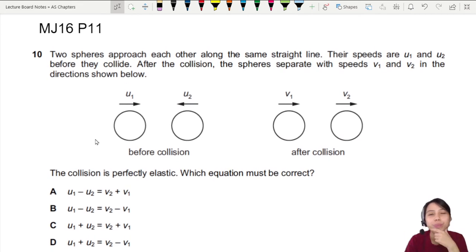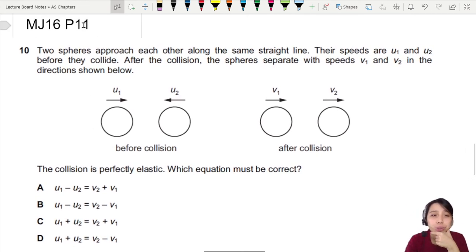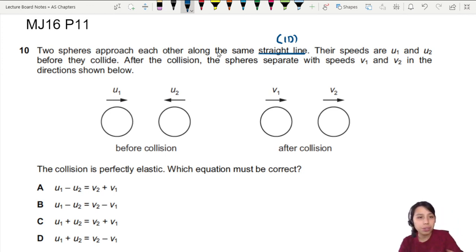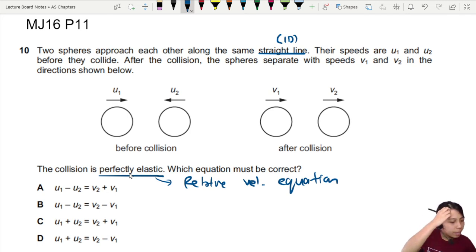Let's look at an example to help us understand this. Just a very quick one from MJ16P11Q10. You have two spheres approaching each other along the same straight line. So it's a one-dimensional collision. The speeds are given to us. After the collision, they separate. Now, here's a clue. The collision is perfectly elastic. Elastic? That tells us, although we don't have the mass, you need to know the mass if you want to use the conservation of momentum. But we don't know that. So if it's perfectly elastic, we can use the relative velocity equation.